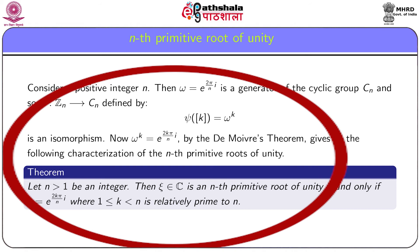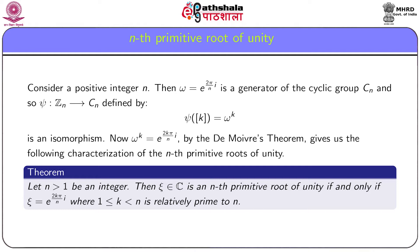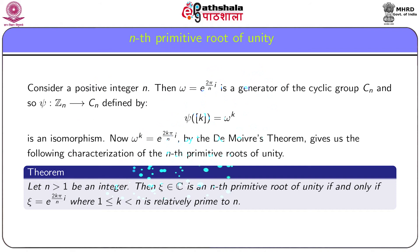Suppose n is a positive integer and denote ω = e^(2πi/n). Then ω is a generator of the cyclic group C_n, and if we define ψ: Z_n → C_n by ψ([k]) = ω^k, then ψ becomes an isomorphism from Z_n onto C_n. Hence ω^k = e^(2kπi/n) becomes a generator of C_n if and only if [k] is a generator of Z_n, which is equivalent to k being relatively prime to n.